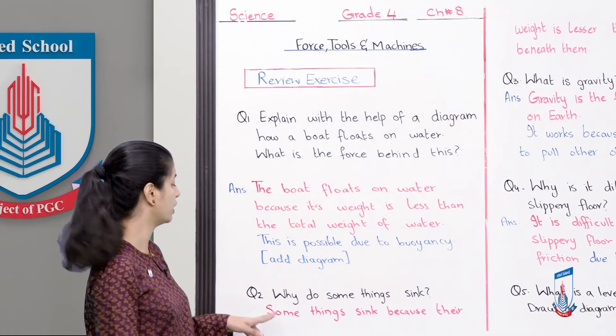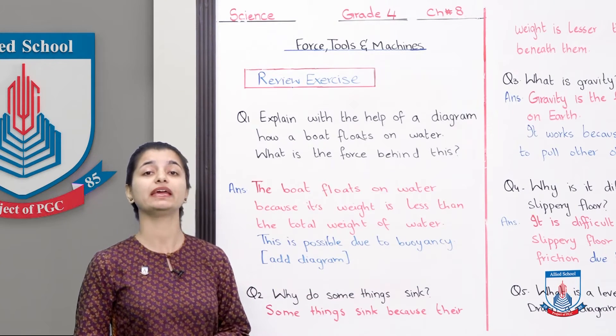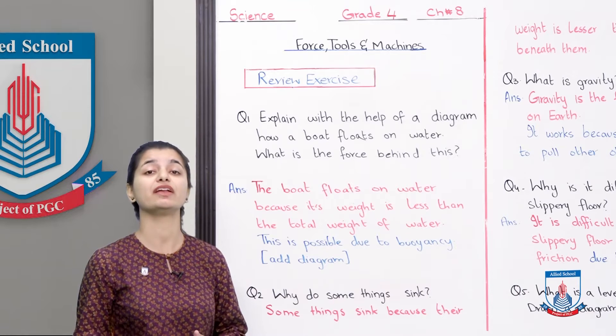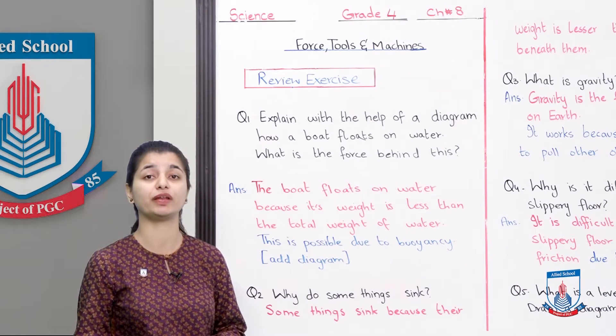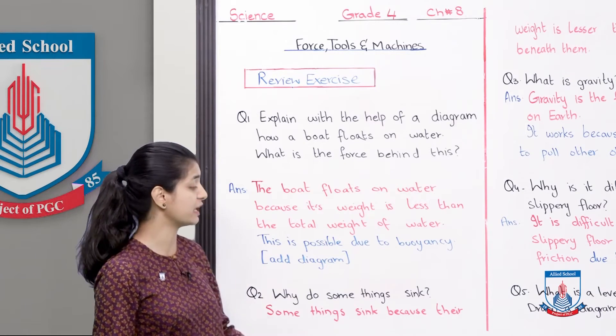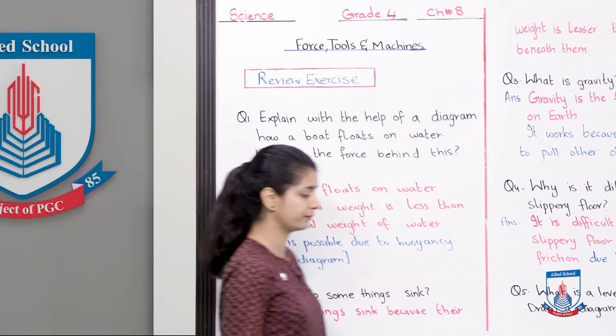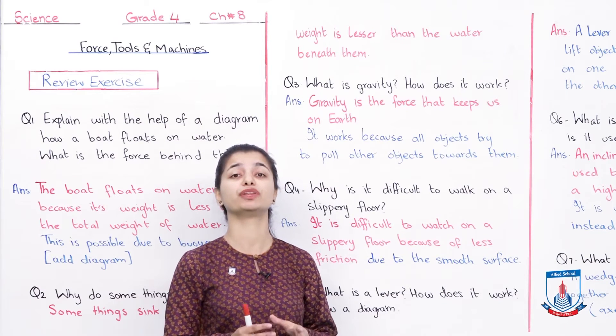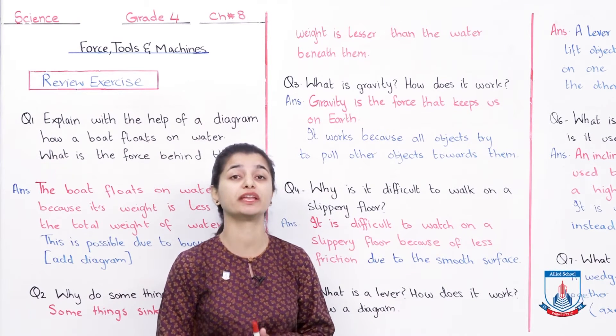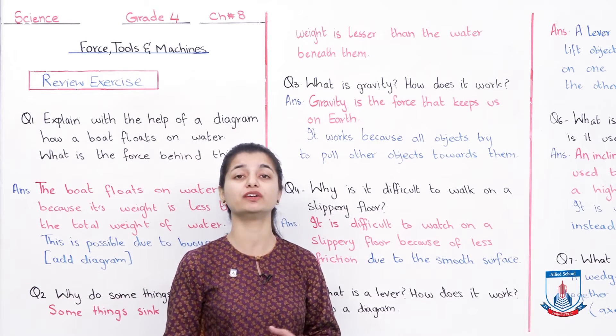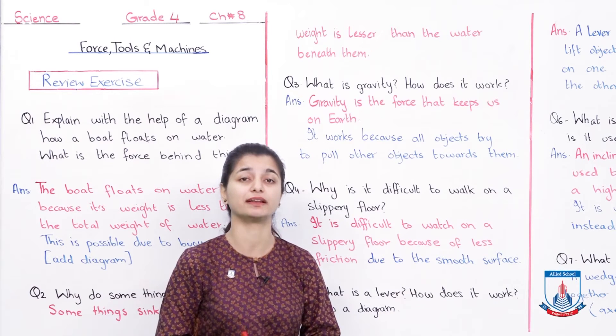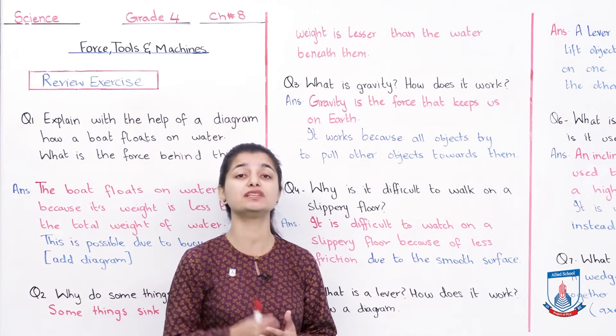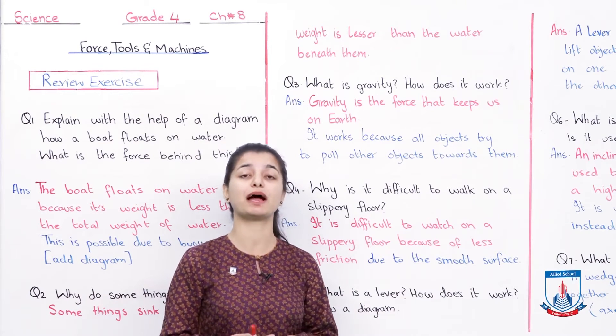Question 2: Why do some things sink? Some things sink because their weight is greater than the water beneath them. For an object to float on water, it is important that the weight of the object is less than the weight of water displaced. If the object's weight is more, then it will sink.